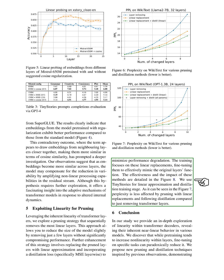During training, we concentrate on fine-tuning these linear replacements to effectively replicate the original layers' functionality. The effectiveness and impact of these approaches are explained in the figure. We utilize tiny stories for the linear approximation and distillation training phase. The figure shows that using linear replacements and distillation after pruning has less impact on perplexity compared to simply removing transformer layers.